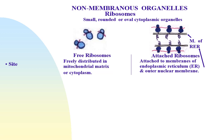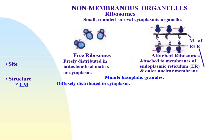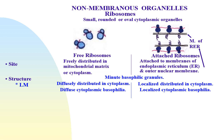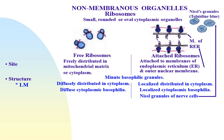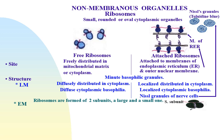By light microscope, ribosomes appear as minute specific granules which may be either diffusely distributed in the cytoplasm, causing diffused basophilia, as in the case of free ribosomes, or locally distributed in the cytoplasm, causing localized basophilia, as in attached ribosomes, as seen in the Nissl granules of nerve cells, which are formed of detached portions of rough endoplasmic reticulum with some attached ribosomes.